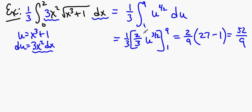The nice part about doing definite integrals with u substitution is that you don't have to substitute back in for x if you make this change of variable. You don't have to sub back in — you could, in which case you'd go back to 0 to 2 for your x limits, but you don't have to.